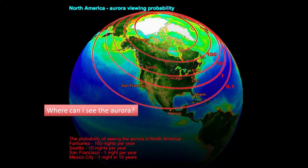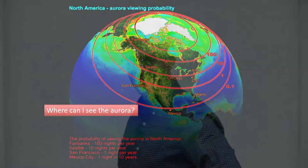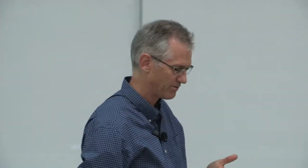In Fairbanks we see the aurora 100 nights per year; Seattle might see it 10 nights per year; San Francisco one night per year; and Mexico City one night in 10 years. We're ideally situated. The auroral oval can expand depending on driving conditions from the solar wind. Even when I lived in Boulder, Colorado, we did see the aurora — but typically when it expands that far south, it's that deep red emission that's hard for the naked eye to see.